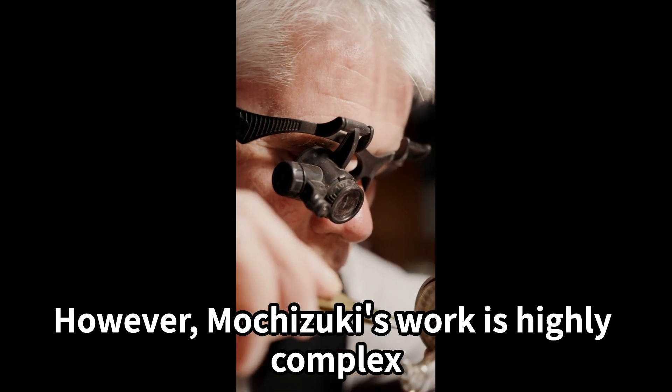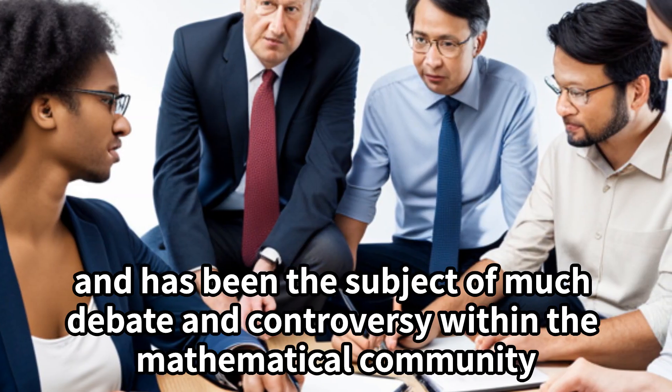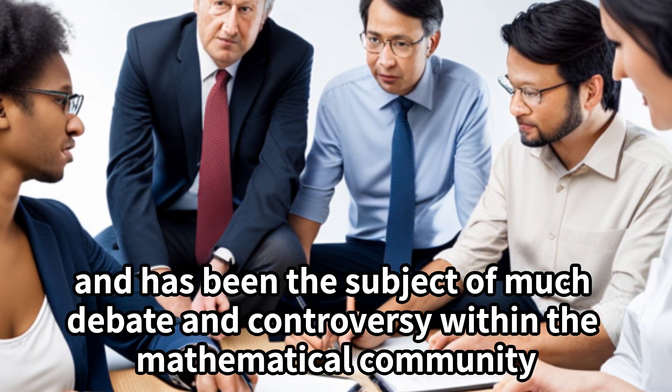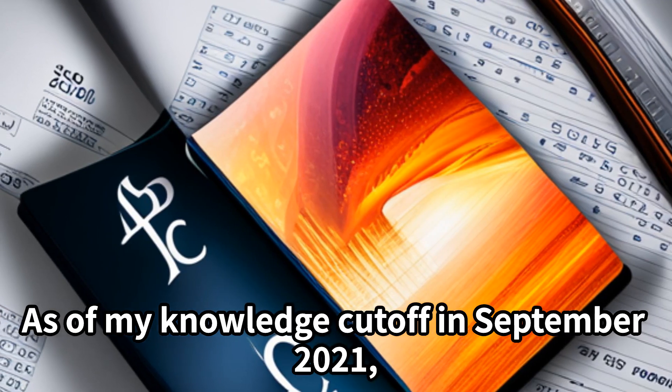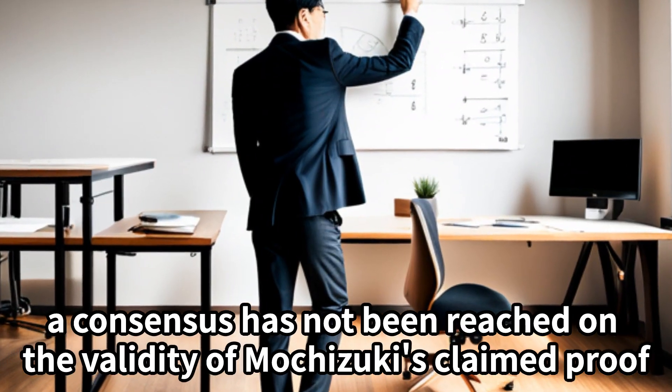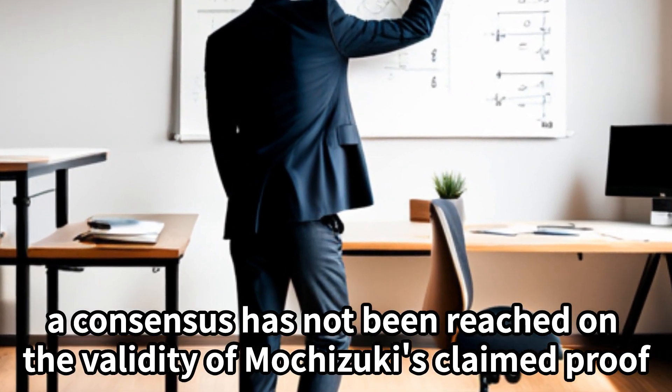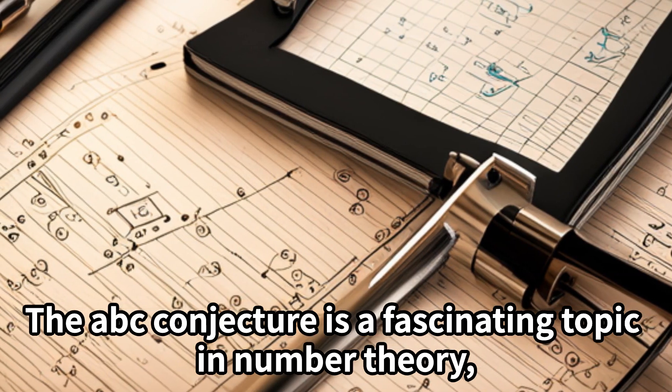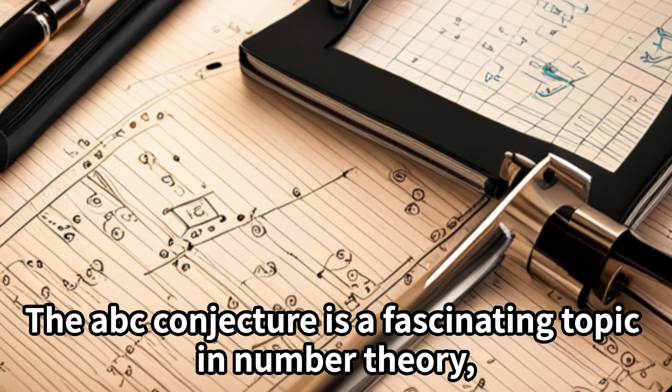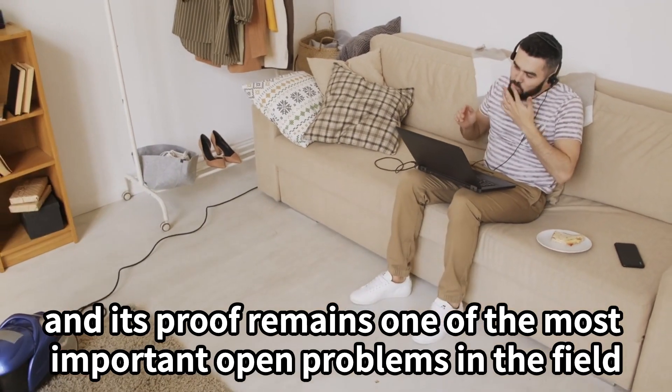However, Mochizuki's work is highly complex and has been the subject of much debate and controversy within the mathematical community. As of my knowledge cutoff in September 2021, a consensus has not been reached on the validity of Mochizuki's claimed proof. The ABC conjecture is a fascinating topic in number theory, and its proof remains one of the most important open problems in the field.